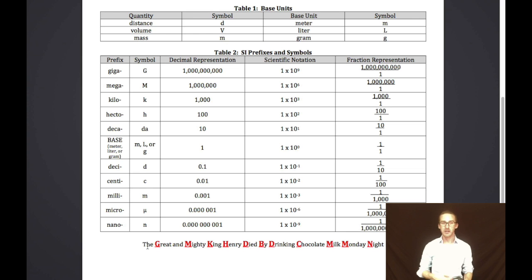Now, the mnemonic device that I like to use to keep this order of prefixes is the great and mighty King Henry died by drinking chocolate milk Monday night. And that'll get you from Giga, Mega, Kilo, Hecto, Deca, your base unit, Deci, Centi, Milli, Micro, Nano.